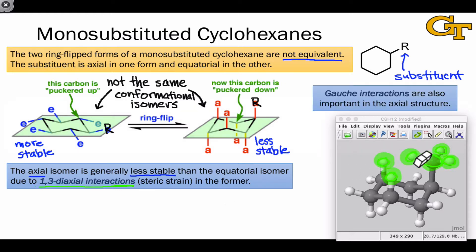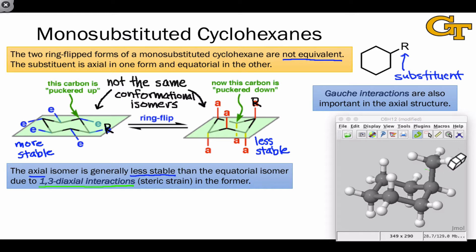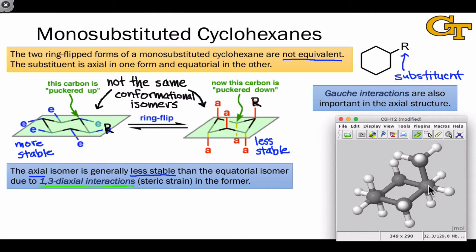Gauche interactions between the substituent and the carbon-carbon bonds in the ring, two bonds away, are also an important destabilizing factor of the axial conformer. And we can see these if we rotate this structure into a Newman projection view. Notice that looking down one of the carbon-carbon bonds of the ring, we can now see that the carbon-substituent bond is gauche to one of the carbon-carbon bonds within the ring, one of the bonds two bonds away.